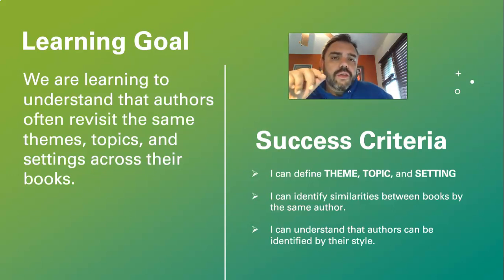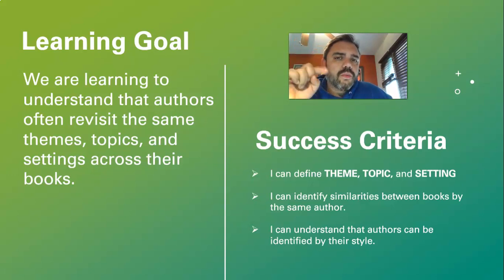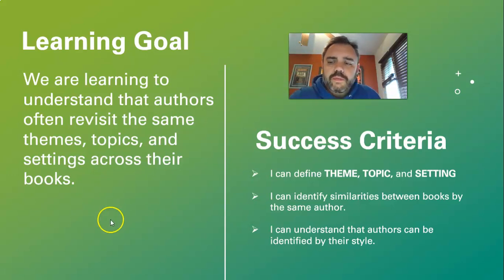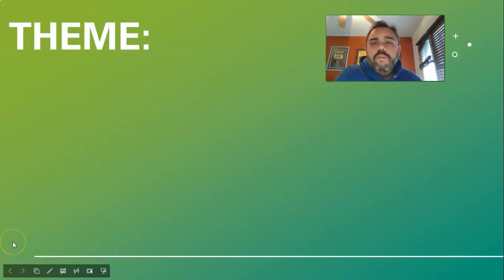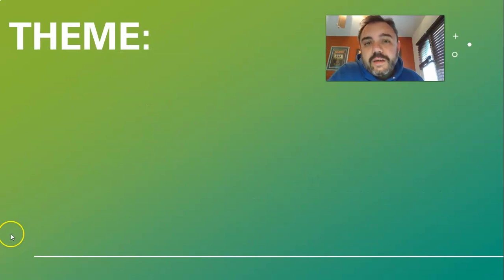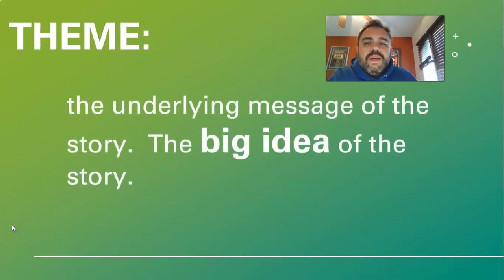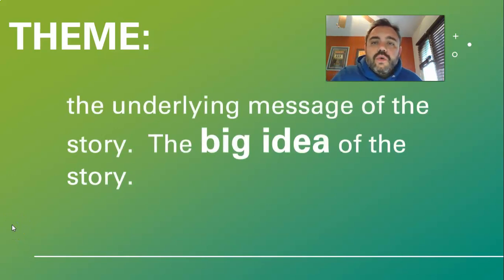So let's look at three important vocabulary words, then we'll head on to an example of how to do just this, and then we'll be out the door. All right, guys, let's make it happen. First up is theme. Now, this might be a little bit of a review for you, so we're not going to spend too much time on it. Theme is the underlying message of the story.